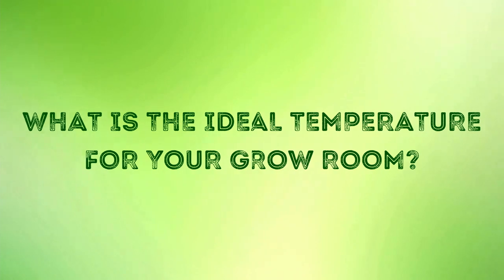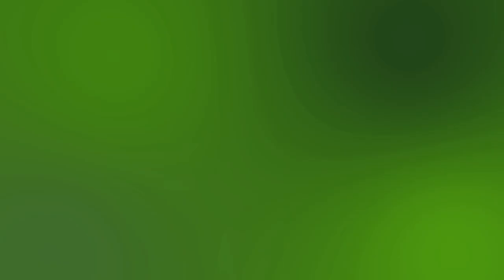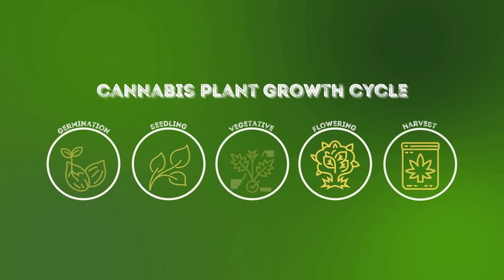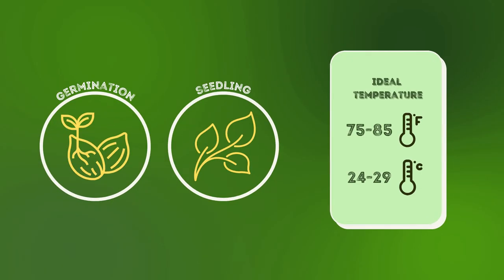What is the ideal temperature for your grow room? For every stage of your plant's growth cycle, there's an ideal room temperature. During the early stages, such as the germination and seedling stage, the perfect temperature range is 75 to 85 degrees Fahrenheit or 24 to 29 degrees Celsius.